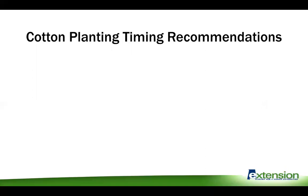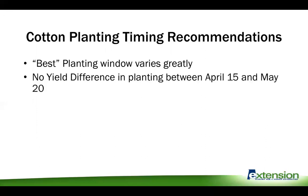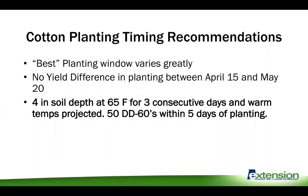Now for the nuts and bolts of when to plant your cotton. The best time varies greatly according to environmental conditions and weather. There are really no yield differences planting in the sweet spot window between April 15th and May 20th as long as environmental conditions are right. The big recommendation is: you need your four-inch soil depth to be at 65 degrees Fahrenheit for at least three consecutive days before you start planting, combined with warm temperatures projected ahead.